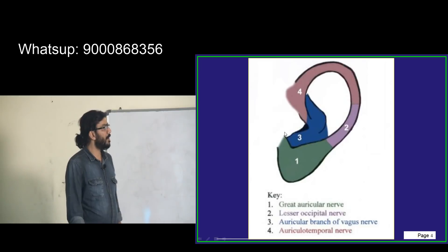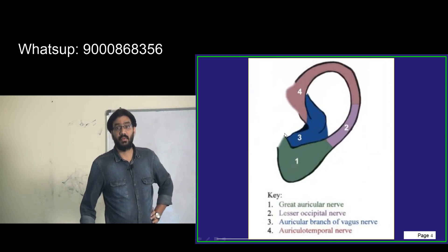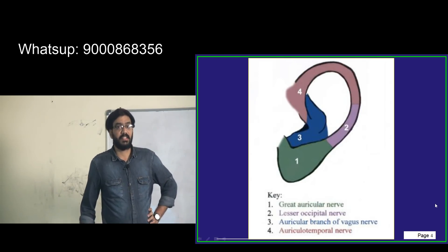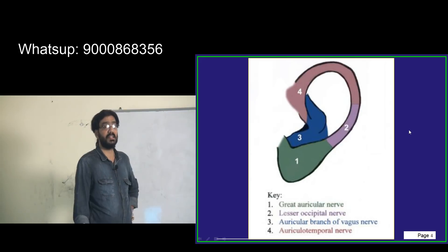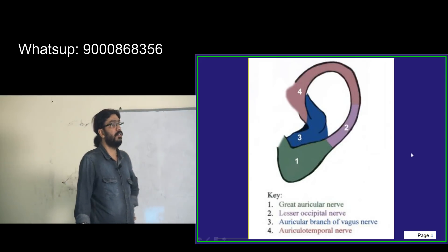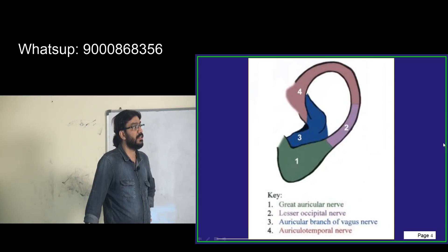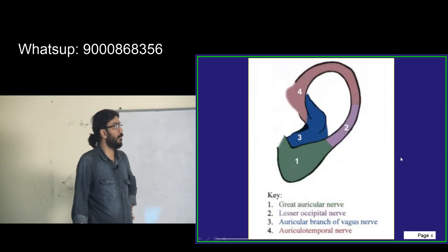The ear is innervated by multiple cranial nerves. Most of the cranial nerves in head and neck are involved in ENT. Out of 12 cranial nerves, most supply the ENT region. Most special senses are also concentrated in ENT - balance, hearing, taste, and smell - that is 4 out of 5. The fifth is vision, which belongs to ophthalmology.